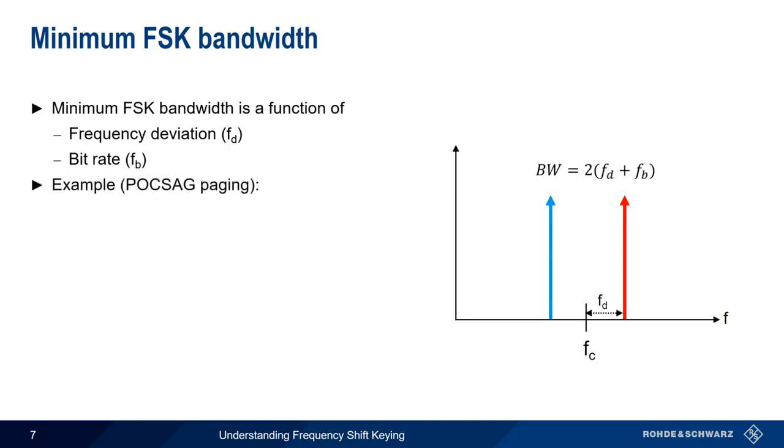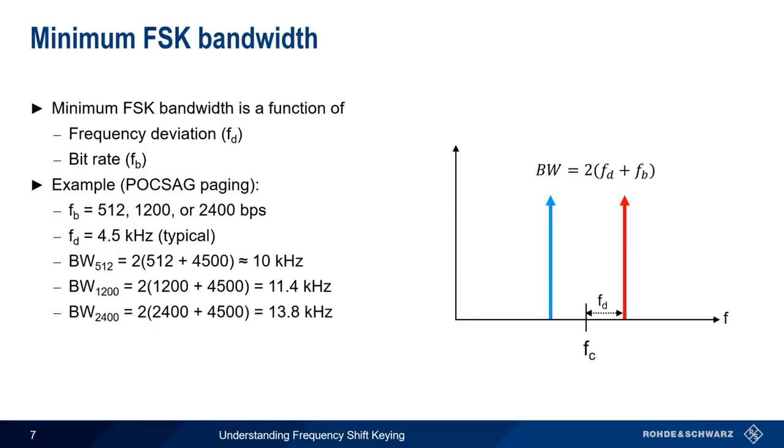Let's use POCSAG paging as an example. In this application, the three common bitrates are 512, 1200, or 2400 bits per second, and a typical deviation is 4.5 kilohertz. If we compute the minimum bandwidth for each of these data rates, we can clearly see that minimum bandwidth increases as the bitrate increases.